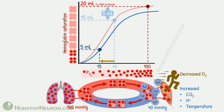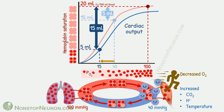At this point, oxygen content of blood can be as low as 5 ml oxygen per 100 ml blood. This indicates that about 15 ml oxygen is delivered to exercising tissues, whereas under restful conditions it was only 5 ml. Thus, oxygen delivery is markedly increased due to these changes in the oxygen hemoglobin dissociation curve. If we also consider increased cardiac output during exercise, these numbers are multiplied, meaning more oxygen is transported at a faster rate.